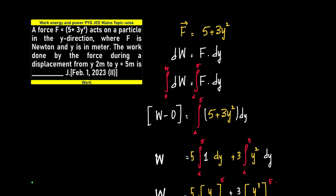A force F is equal to 5 plus 3y squared acts on a particle in the y direction where F is in Newton and y is in meter. The work done by the force during a displacement from y is equal to 2 to y is equal to 5 meter.